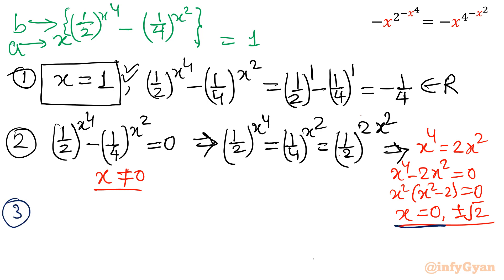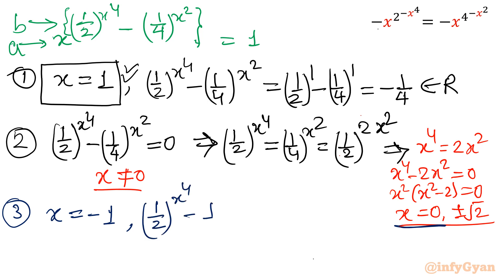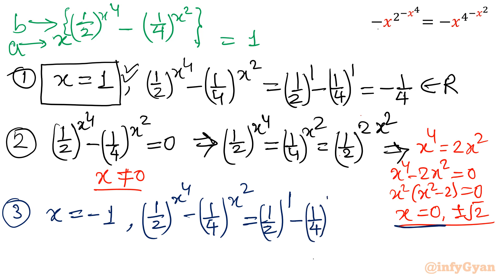Third case: base is negative 1, so x equals negative 1. The power must be even. Evaluating: (1/2)((-1)^4) minus (1/4)((-1)^2) = (1/2)(1) minus (1/4)(1) = 1/2 minus 1/4 = 1/4, which is not an even integer. So we reject this solution.